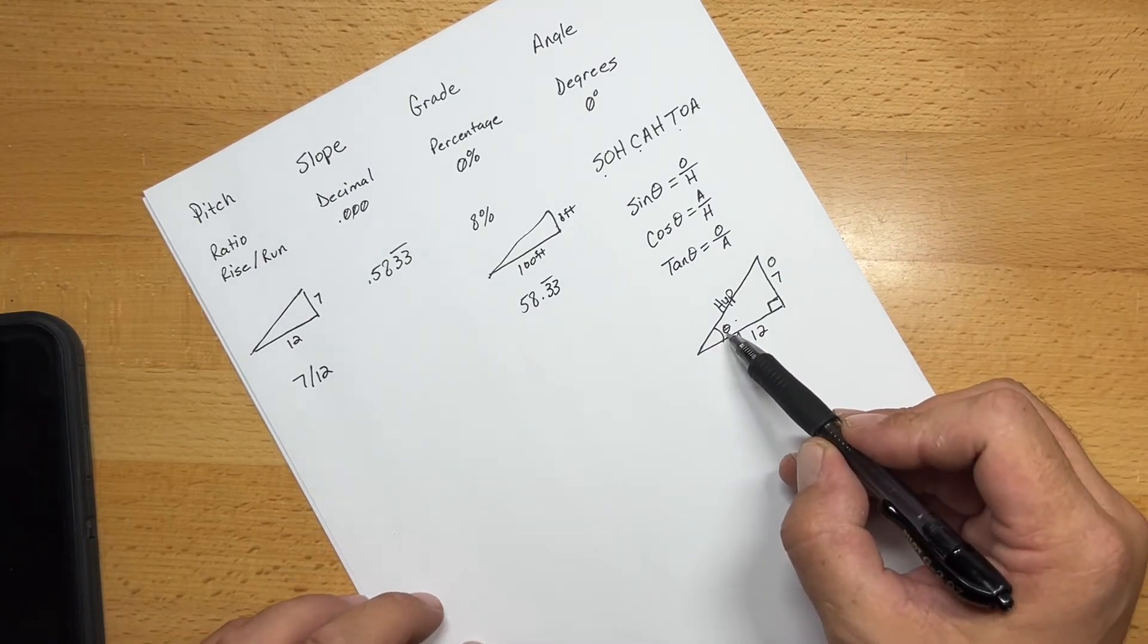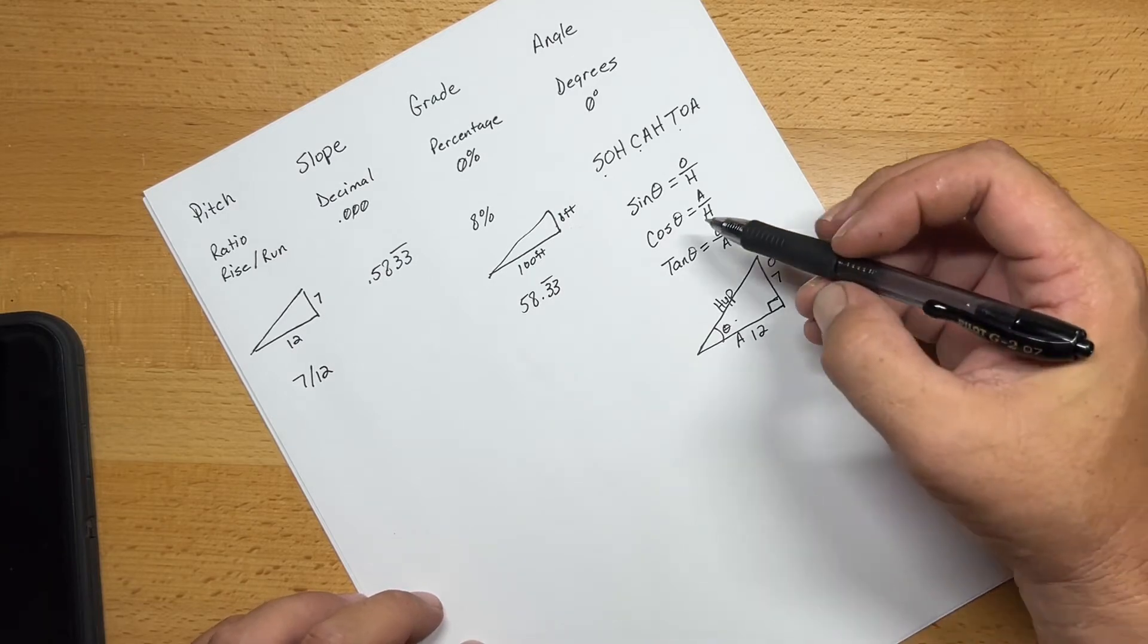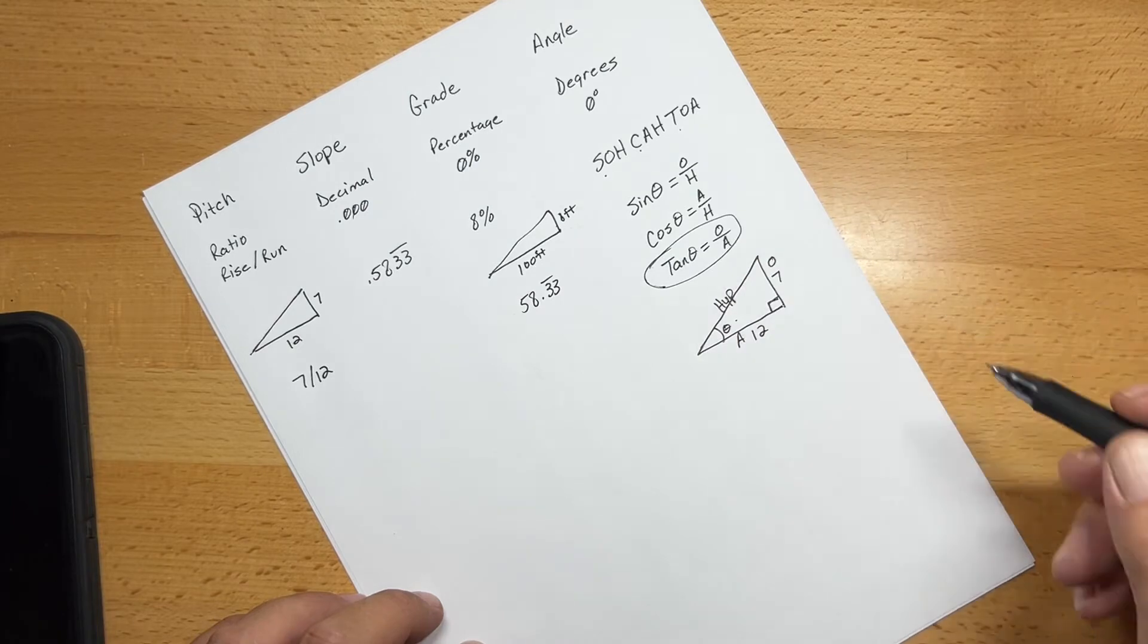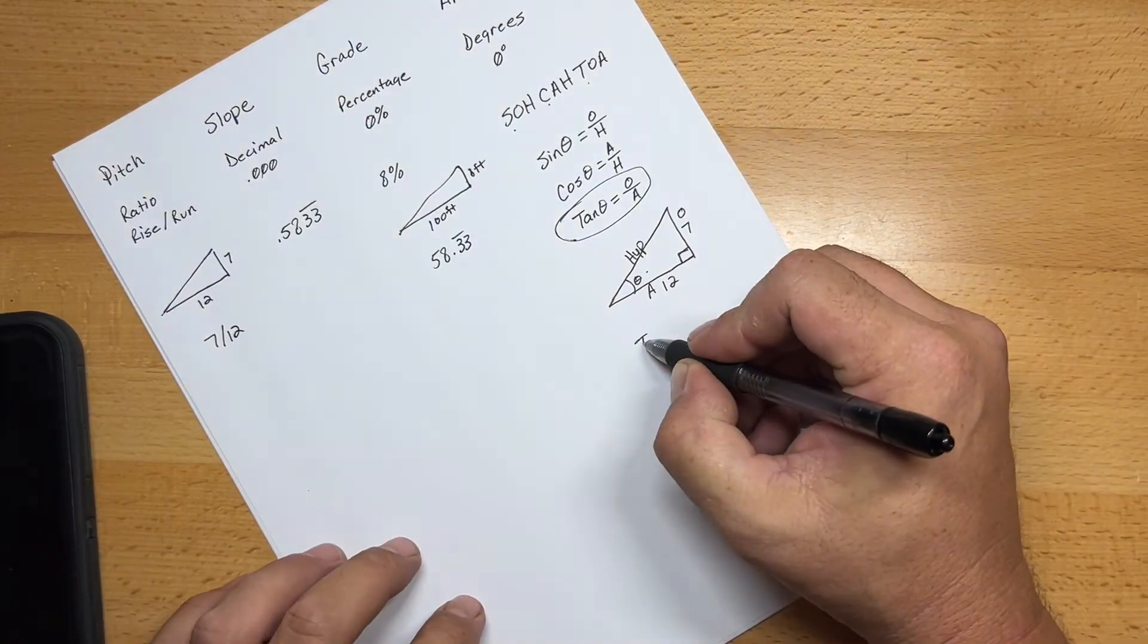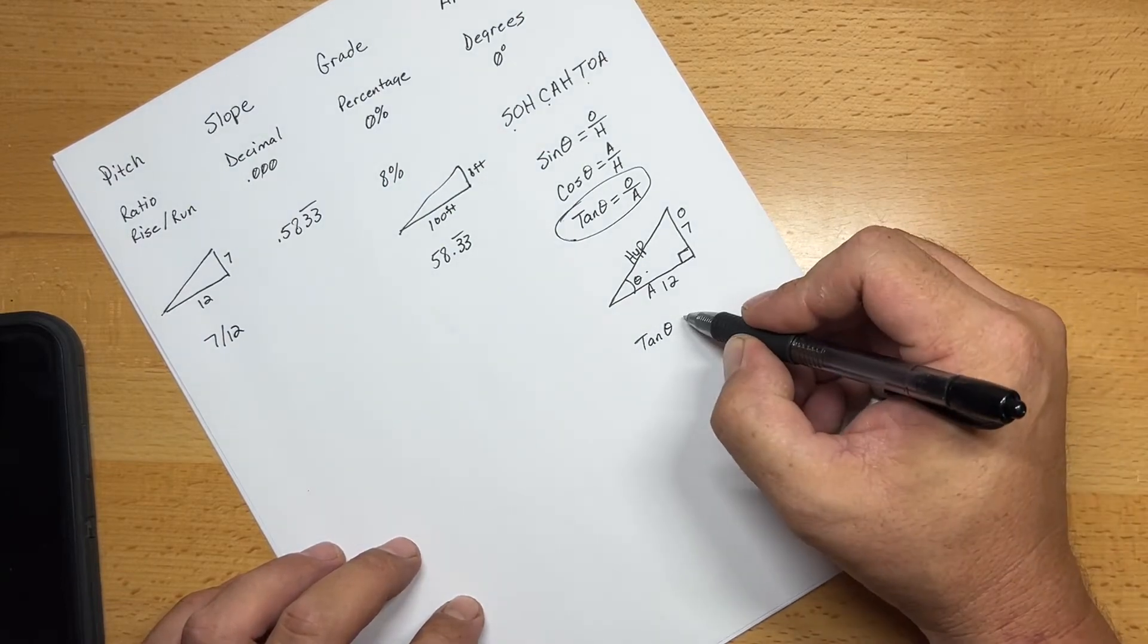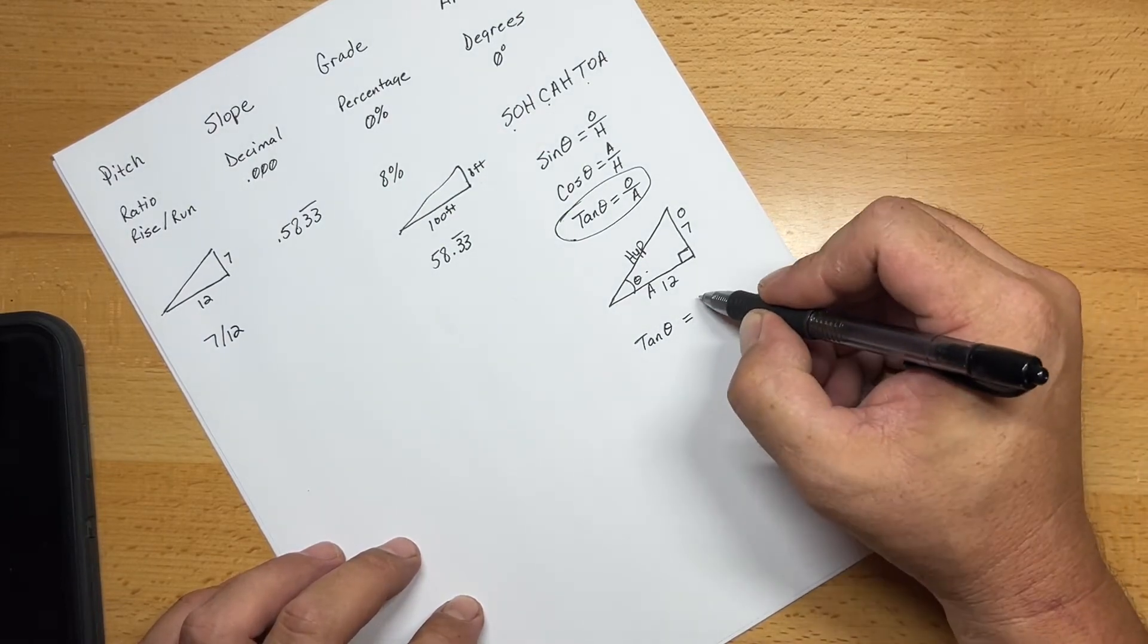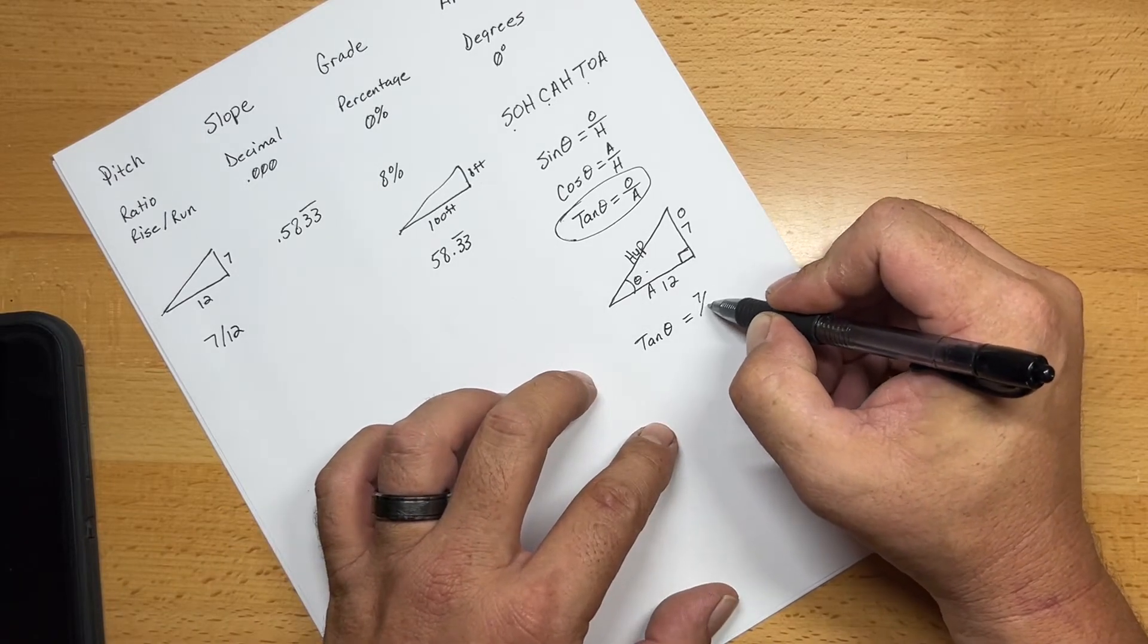In our case, we're trying to solve for the angle theta. And we know the opposite and the adjacent side. So this is the formula that we will be using. So now we're going to plug those values in there. So tangent of theta, or tangent of that angle, the unknown angle, is equal to 7 over 12.